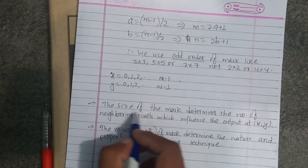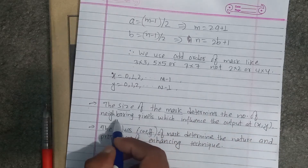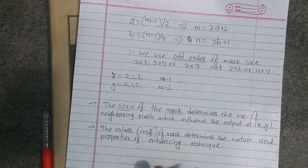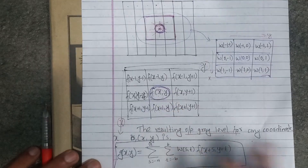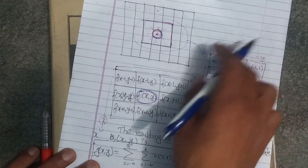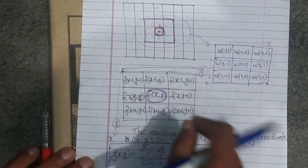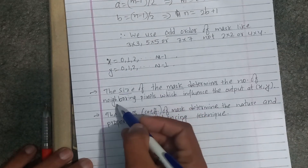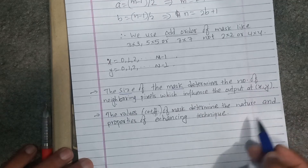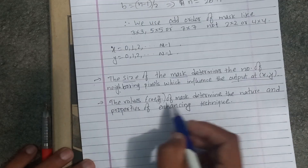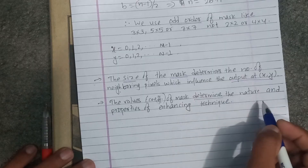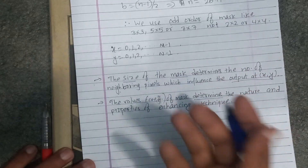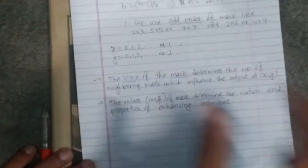The size of the mask determines the number of neighboring pixels which influence the output g(x, y). The coefficient values of the mask determine the nature and properties of the enhancing technique being applied. Together, mask size and coefficient values define what kind of enhancement is achieved.